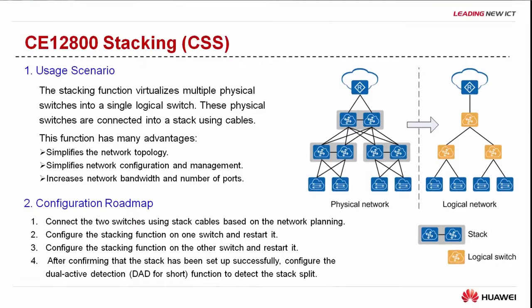Today we will learn how to configure the stacking function on Cloud Engine 12800 switches. The stacking function virtualizes multiple physical switches into a single logical switch. These physical switches are connected into a stack using cables. This function simplifies the network topology, configuration and maintenance, and increases network bandwidth and number of ports.